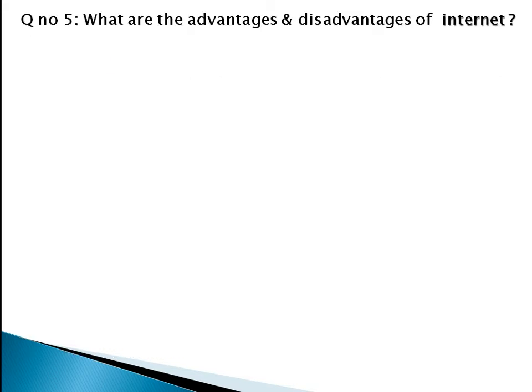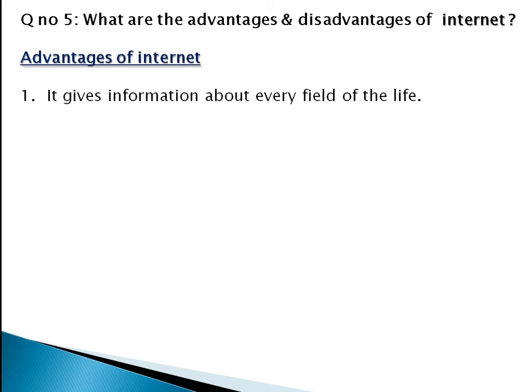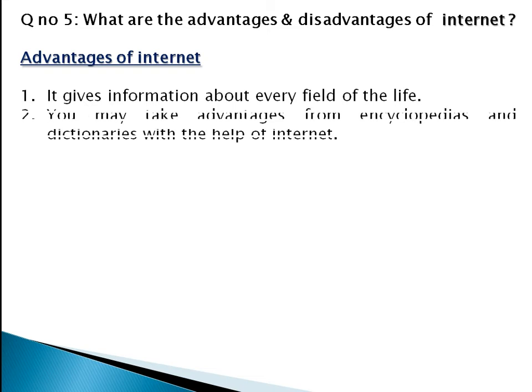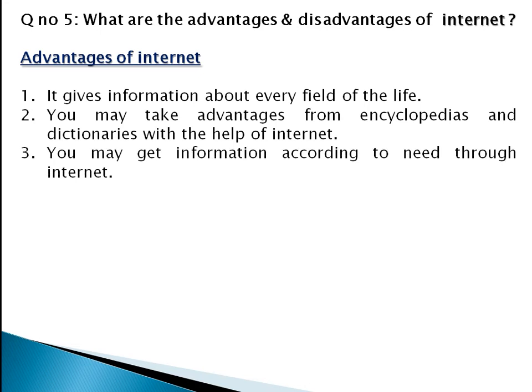Now, what are the advantages and disadvantages of the internet? First, we will explain the advantages. Number one, it gives information about every field of life. You can search on Google or different Wikipedia pages. Different videos are there, so you can gather information. Number two, you may take advantage from encyclopedias and dictionaries with the help of the internet — you don't need to buy them; you can see soft copies. Number three, you may get information according to your specific need through the internet.